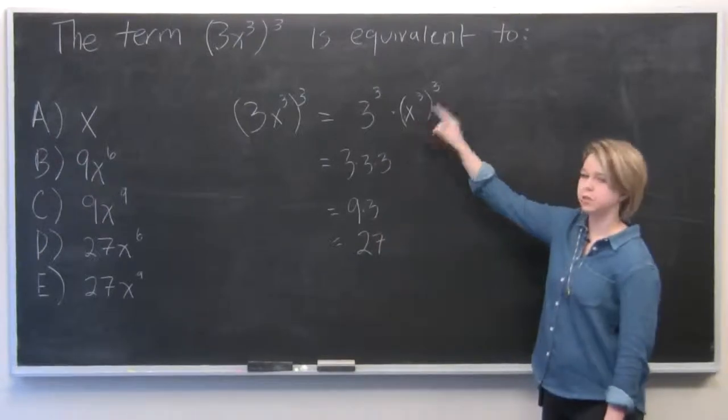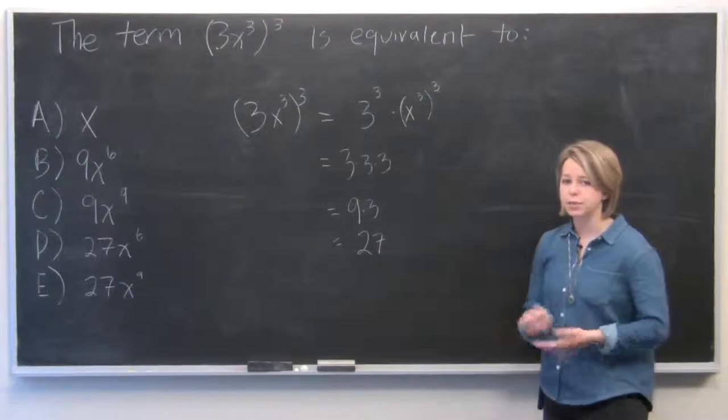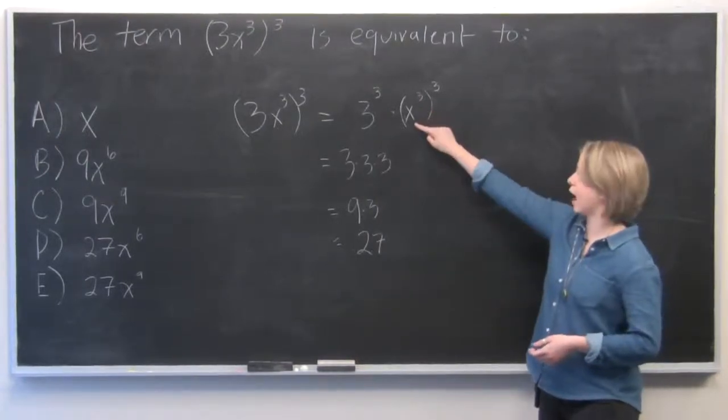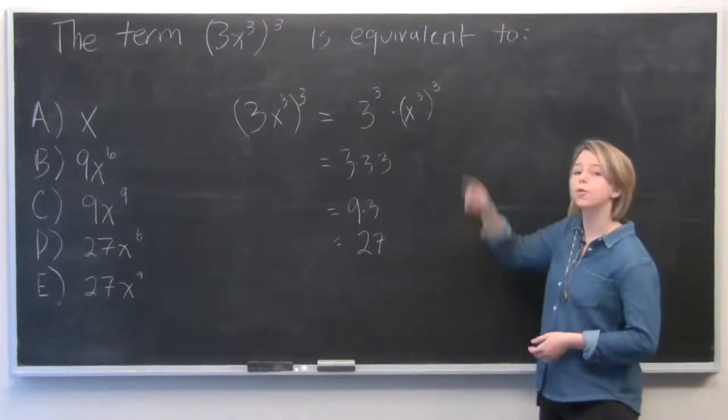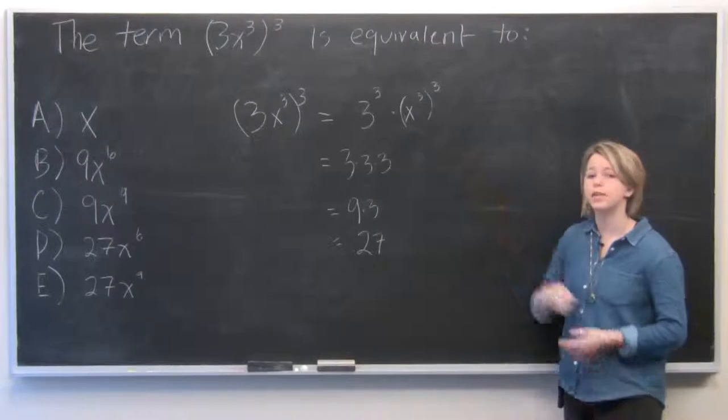x³ to the power of 3 is a little more tricky. If we know our exponent rules it's very simple though. We know that an exponent like we have attached to x here raised to another power, you simply multiply the two exponents together.